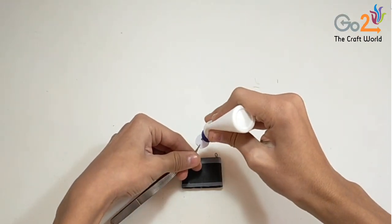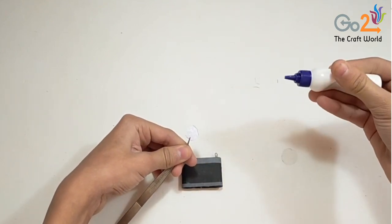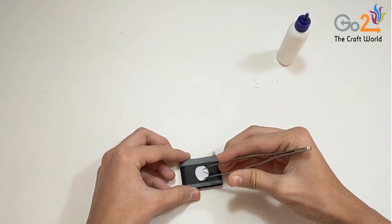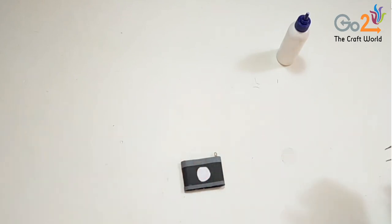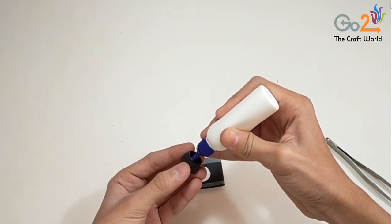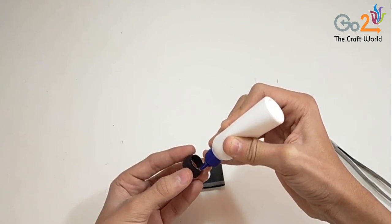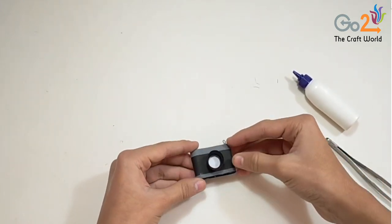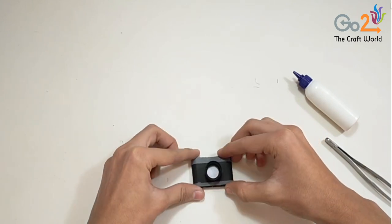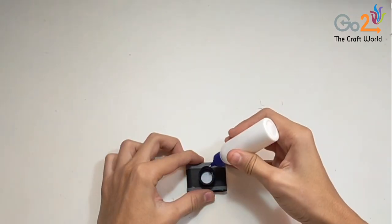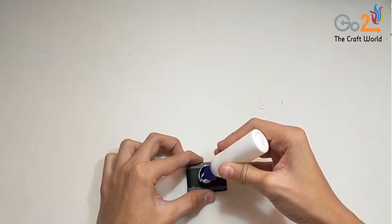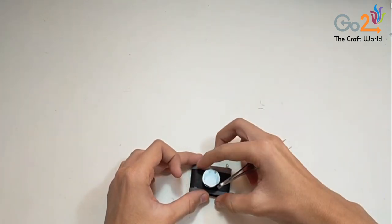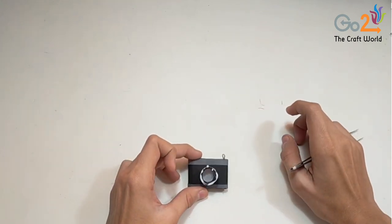We will apply the white sheet in the background like this. So now we will stick the lens, and now we will add the transparent sheet.